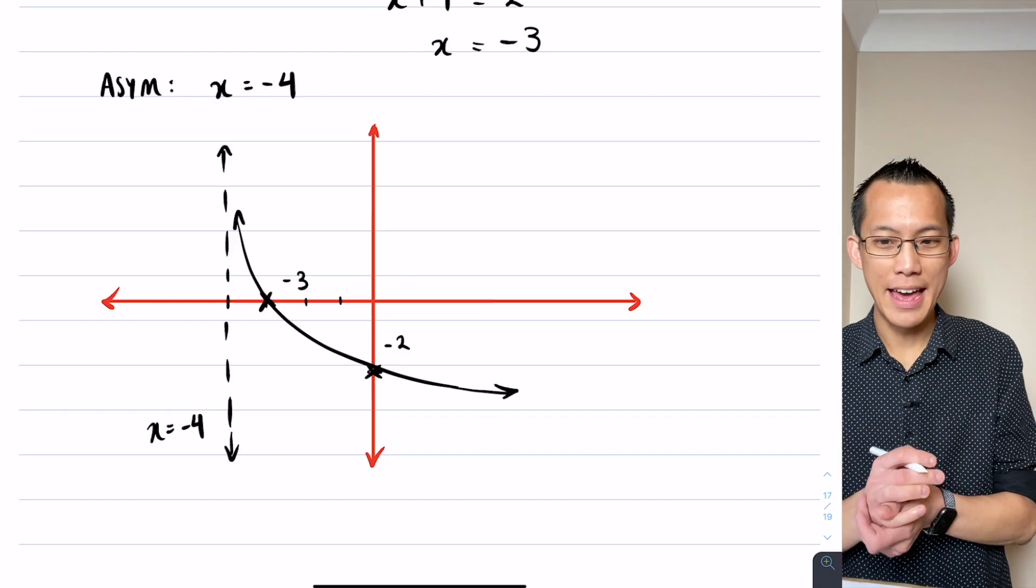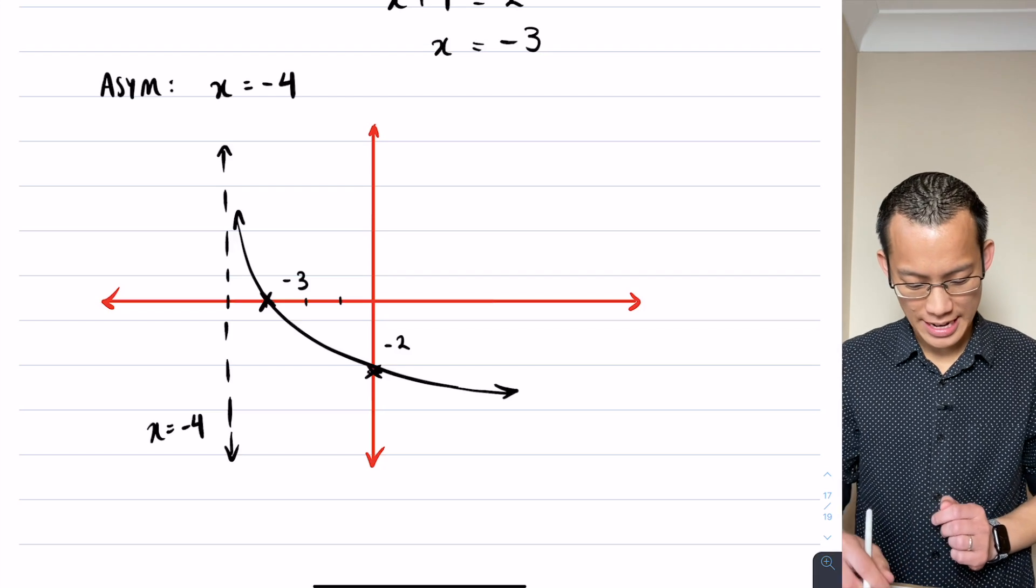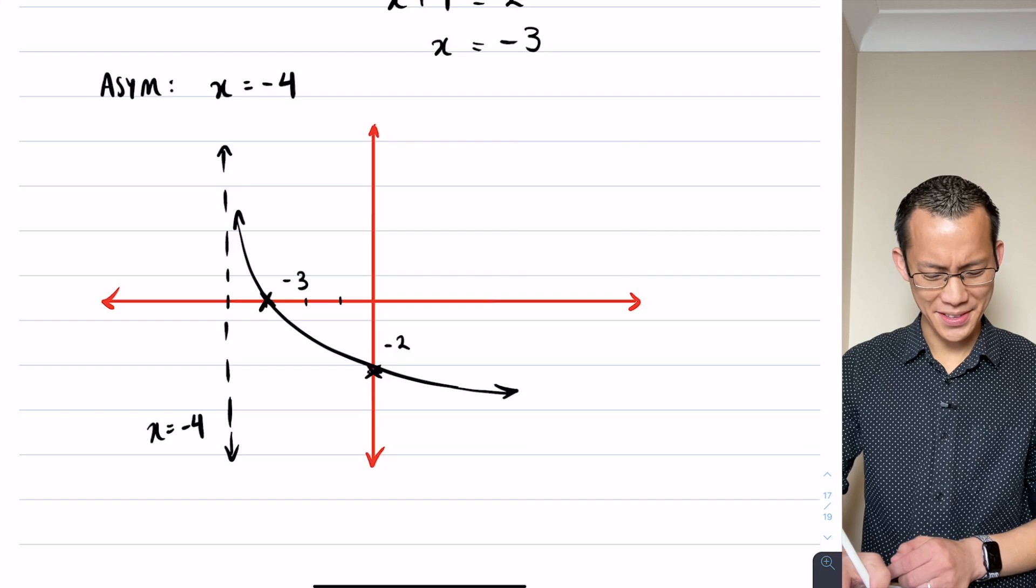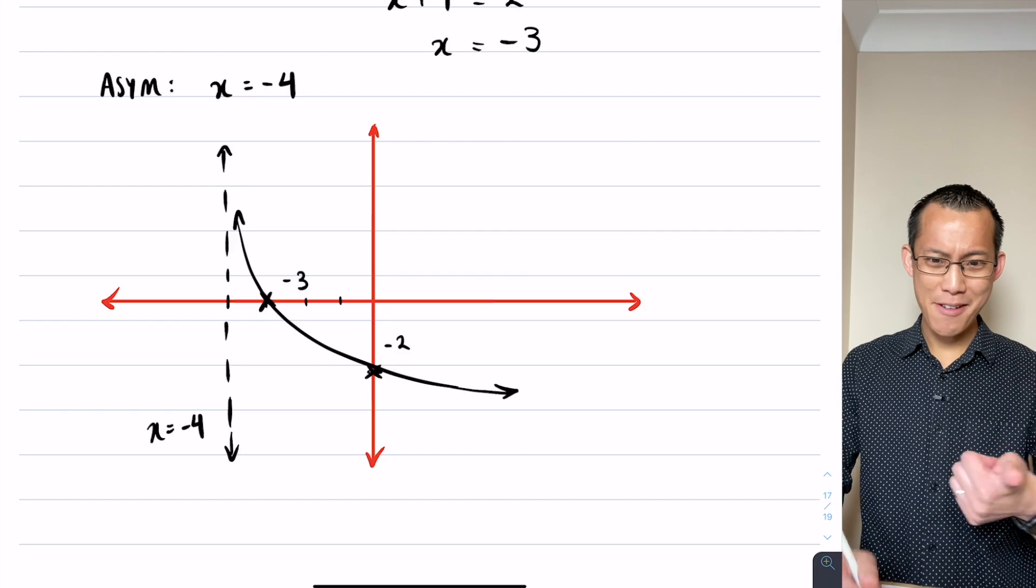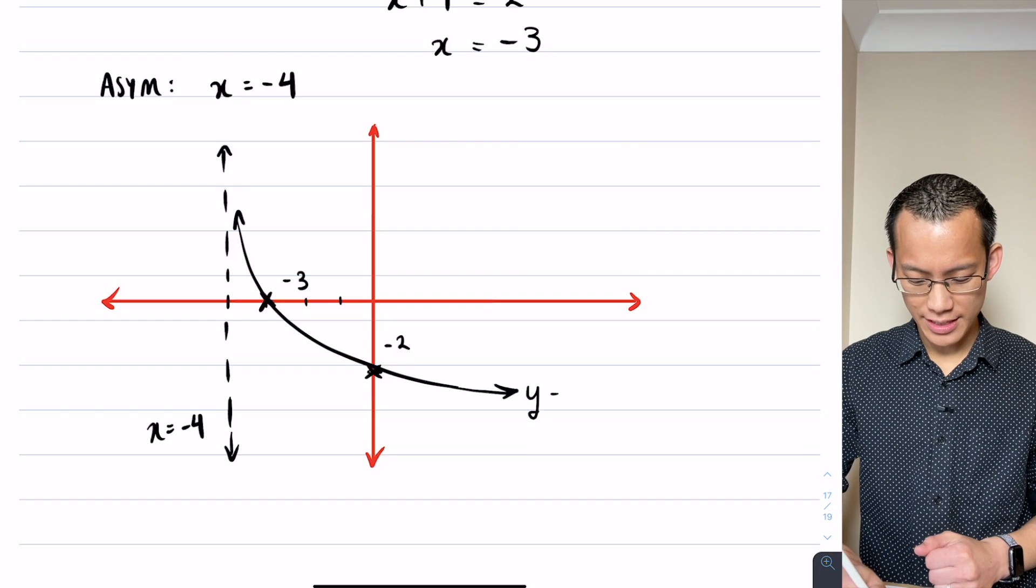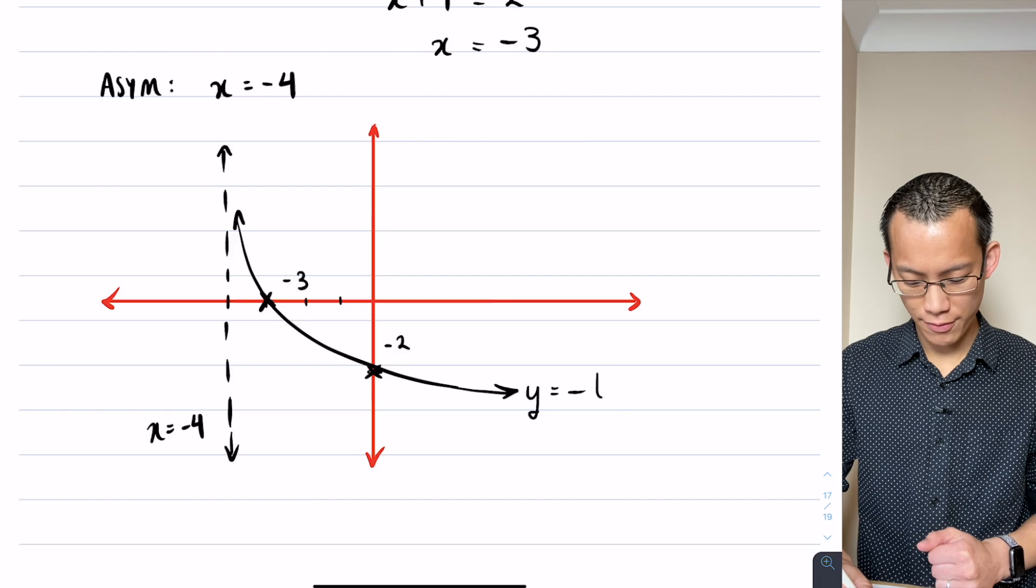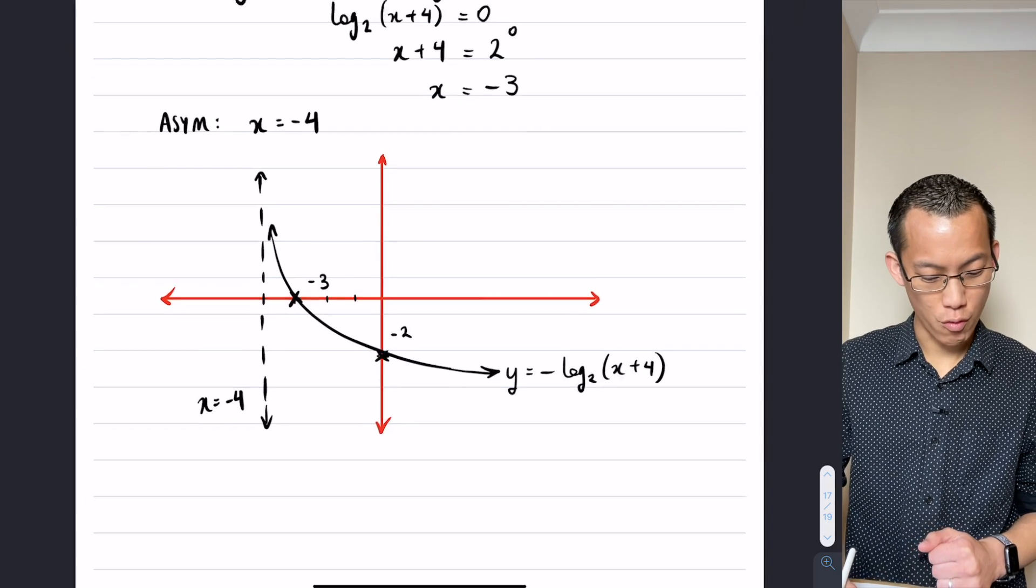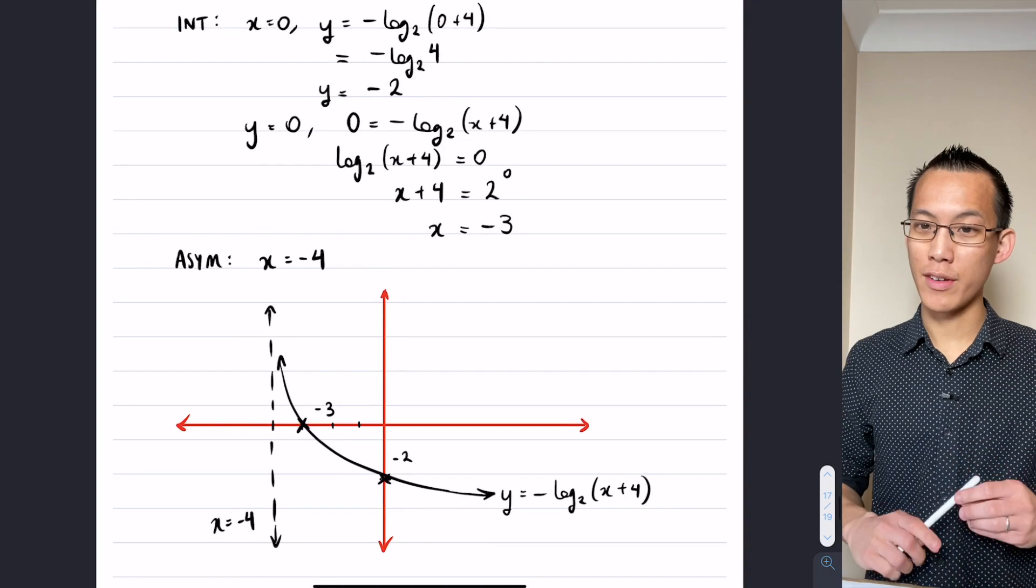It approaches the asymptote and it gets shallower and shallower, but it does it in the negative direction. Have a look - have I got all the pieces of information that I want? Intercepts are there, which give me scale. Asymptote's there. Let's label this guy negative log base 2 of x plus 4, and I think I'm pretty satisfied with that.